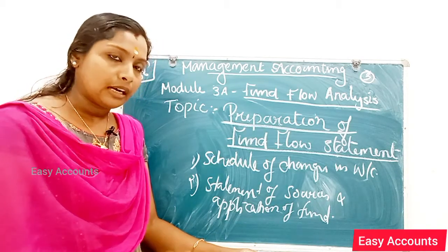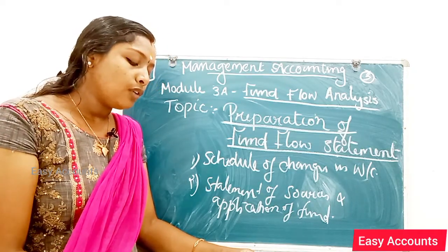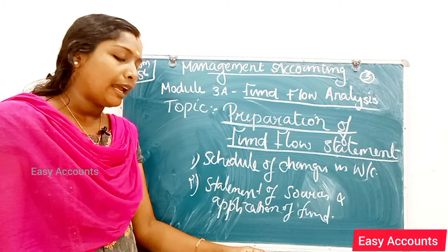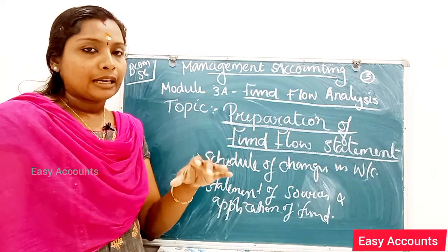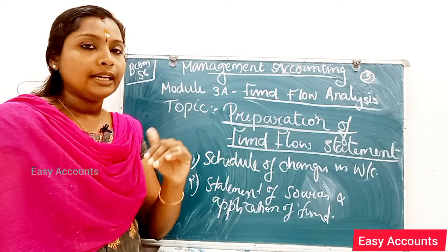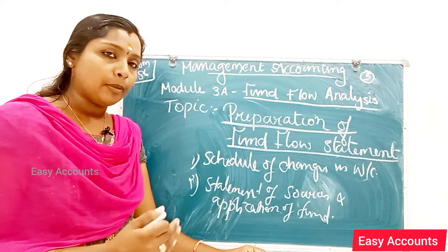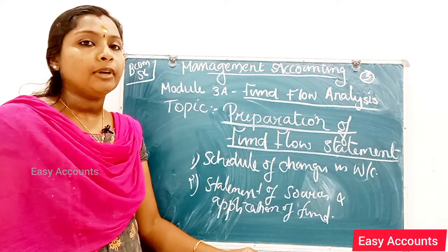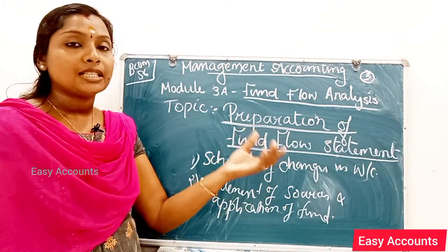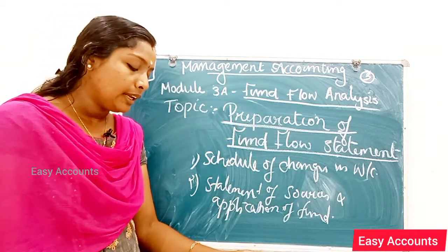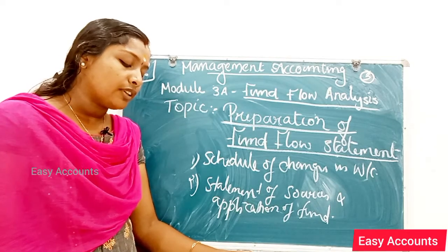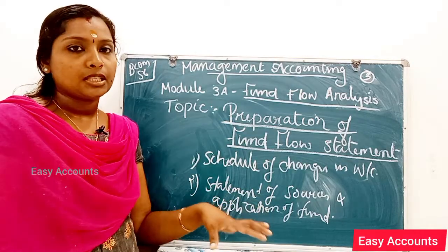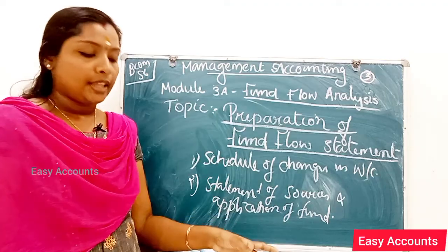What are the rules of current assets? The first part of Fund Flow Analysis is the Schedule of Changes in Working Capital. It is prepared in order to measure the increase or decrease in working capital over a period of time. In the schedule, current assets and current liabilities will be listed, and each current asset of the previous year is compared with that of the current year.